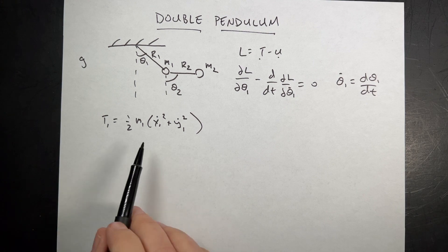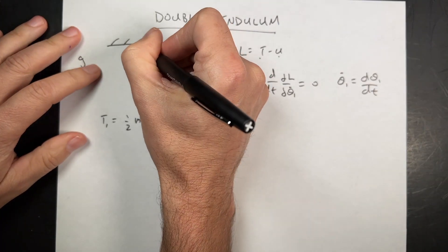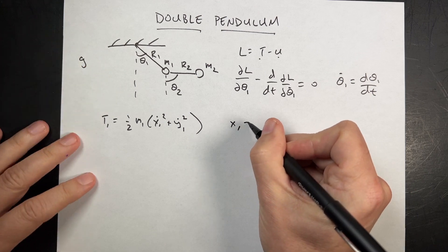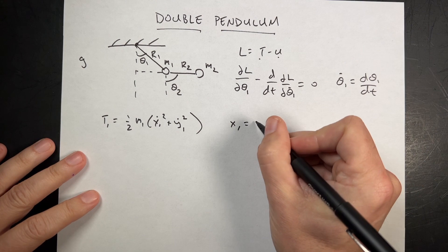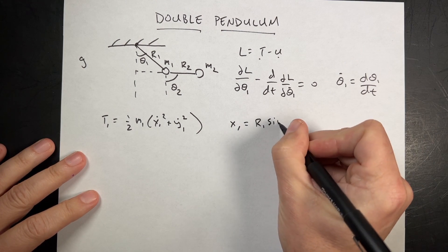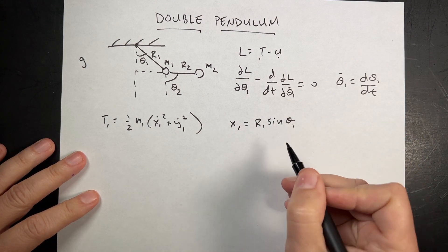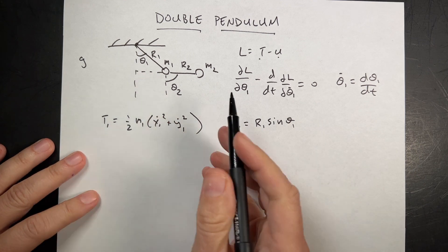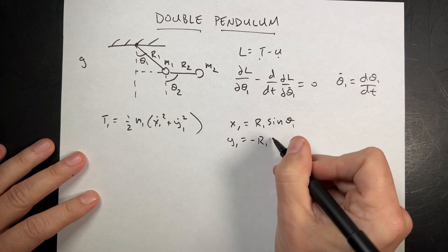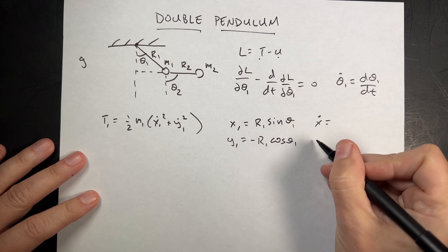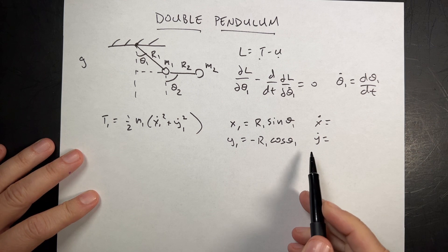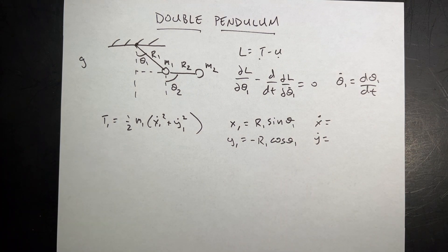That's what we're going to do. Starting with mass 1, if I call this the origin, x1 is going to be R1 sine theta 1, and y1 is going to be negative R1 cosine theta 1. I could easily take the derivatives x dot and y dot and square them and add them together. But I'm not going to do that — I'm going to make Python do that. It's so simple, I can make Python do it.